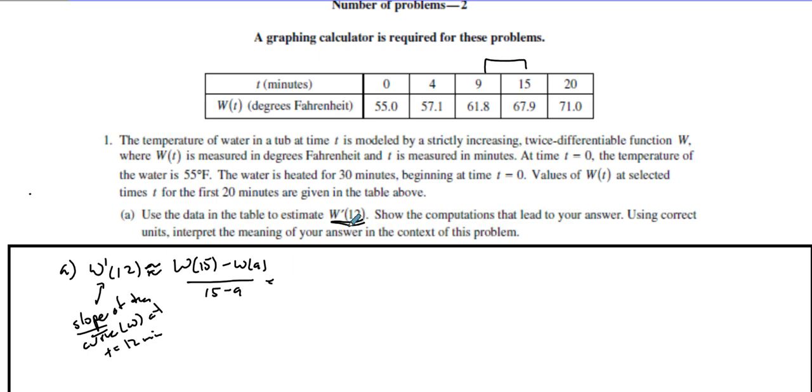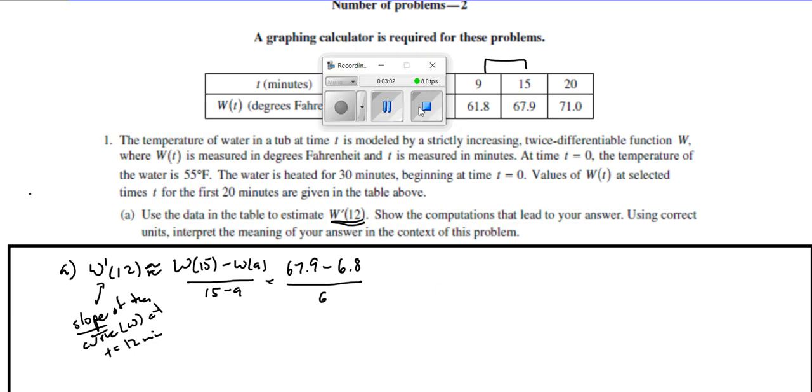We would take W(15) minus W(9) and take 15 minus 9 and figure it out that way. So I would take 67.9 minus the 9 one, which is 61.8, and then we divide that by 6 right there. Let's go put this in your calculator.